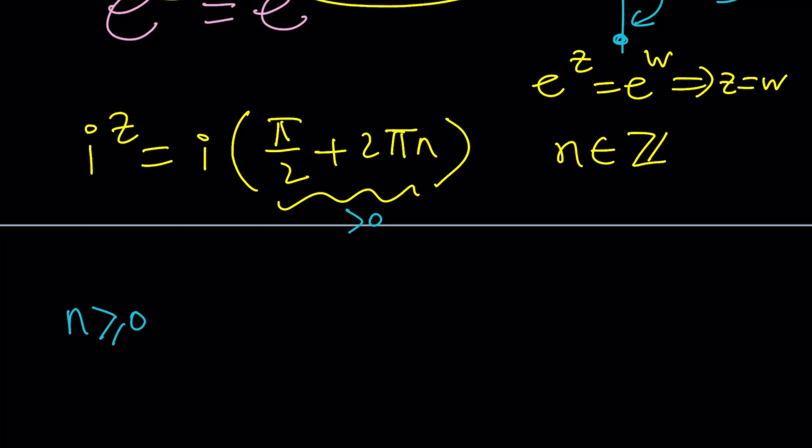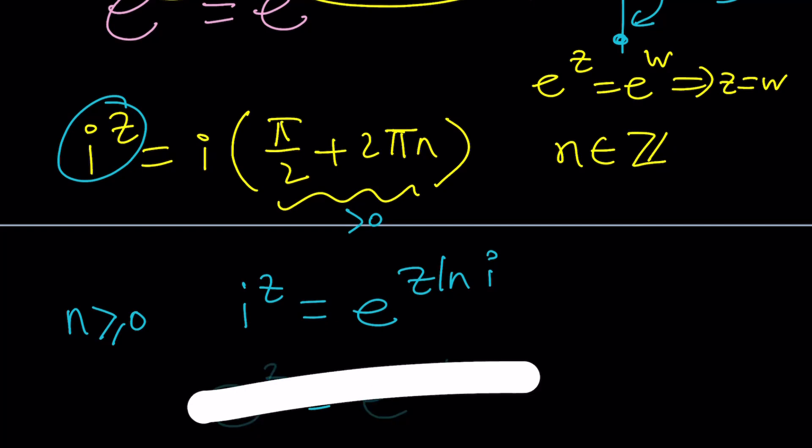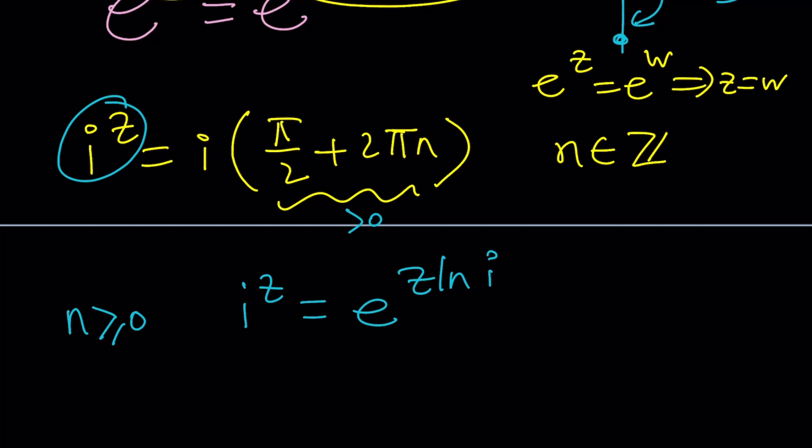First, let's convert this to exponential form. I to the z can be written as e to the power z ln i. In general, w to the z can be written as e to the power z ln w. In this case w happens to be i which is a complex number. Now we got our i to the z. Let's do the same thing on the right-hand side which is a positive multiple of i.